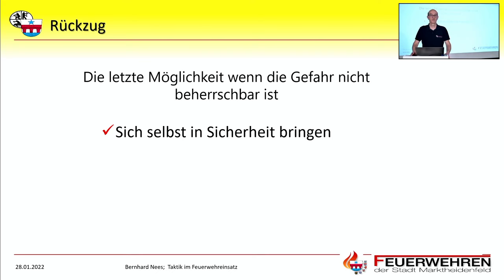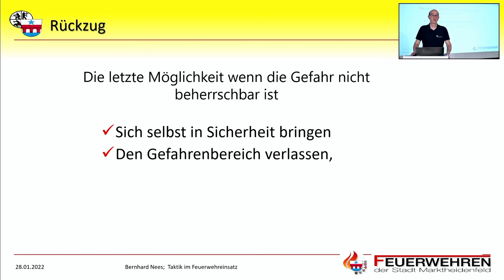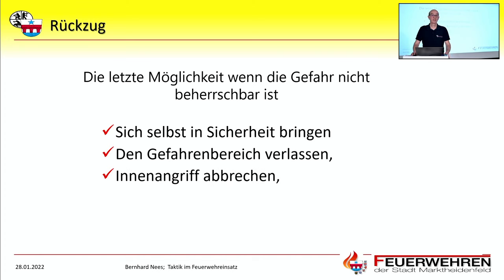Wichtig ist aber, wie alle Entscheidungen, die der Trupp für sich selber trifft: nach außen kommunizieren, damit der Einsatzleiter auch weiß, was da drin vorgeht. Den Gefahrenbereich verlassen ist auch eine Form des Rückzugs – ich begebe mich so weit nach hinten, dass ich von Ziegeln nicht mehr getroffen werden kann, außerhalb des Trümmerschattens eines Gebäudes. Das heißt nicht zwingend, dass ich meinen Angriff ganz vernachlässige, aber in der momentanen Situation muss ich mich ein Stück zurückziehen, um wieder sicher weiter angreifen zu können.